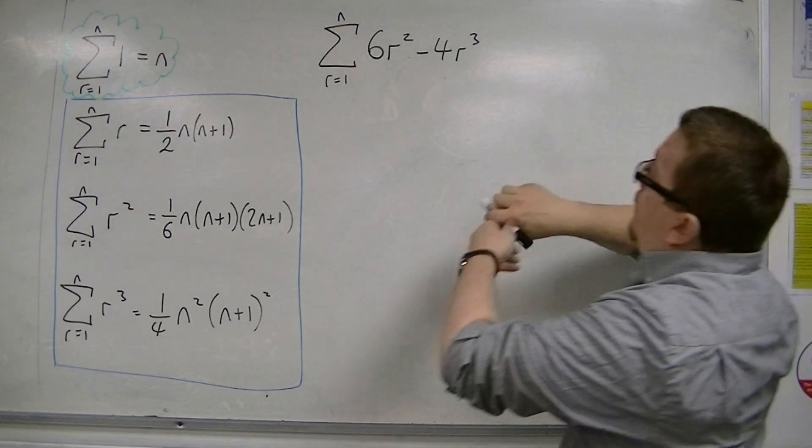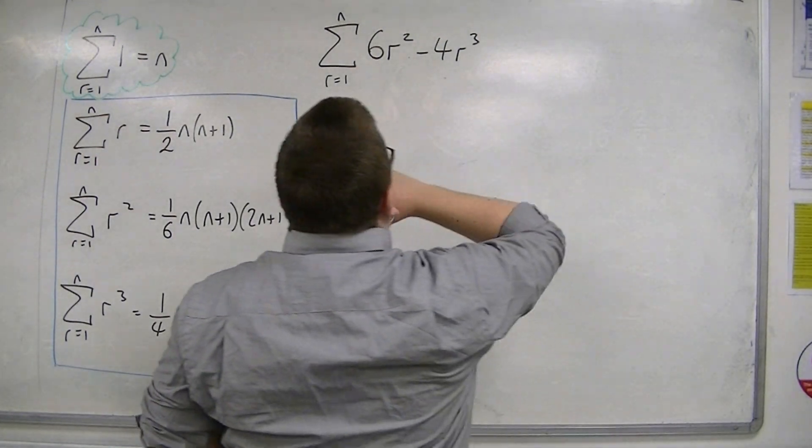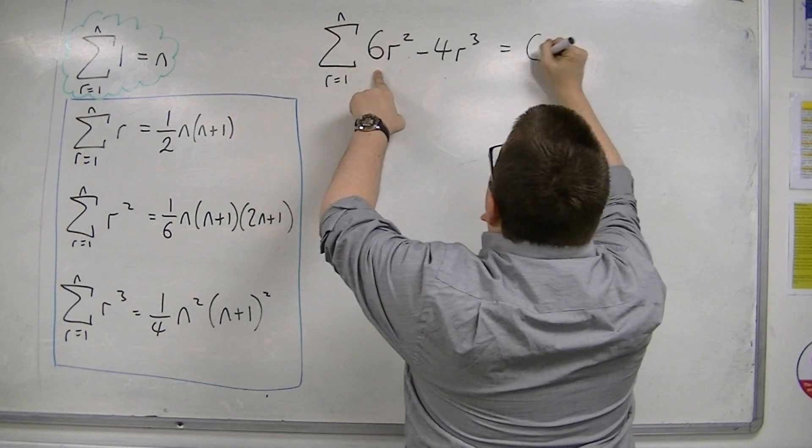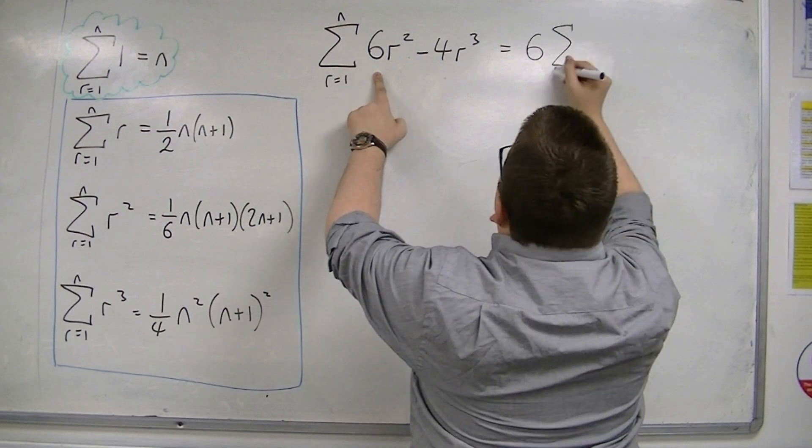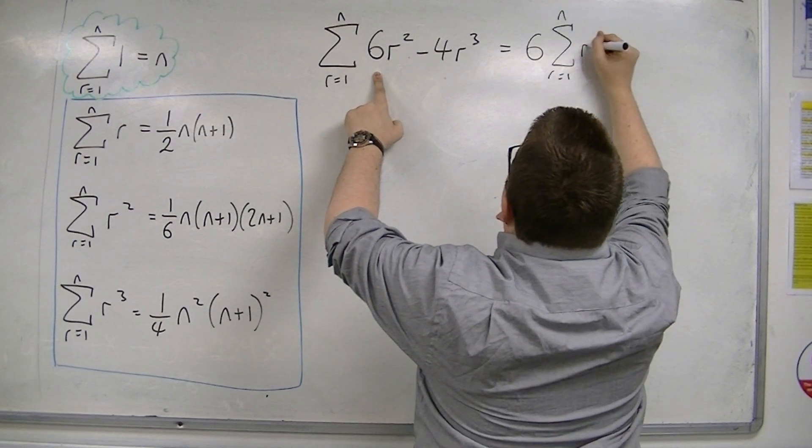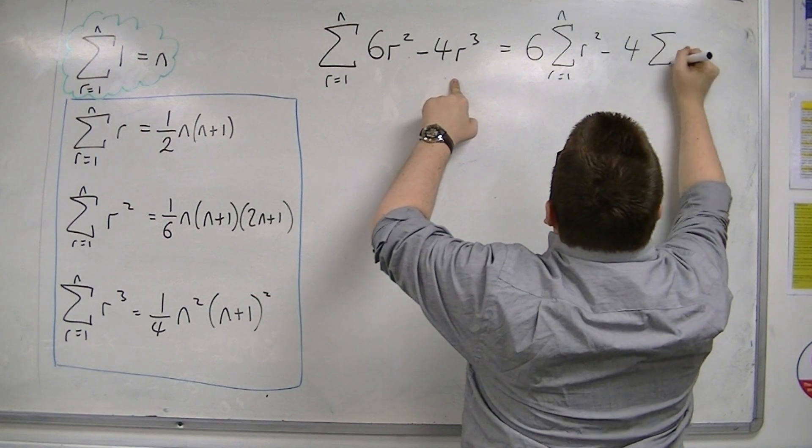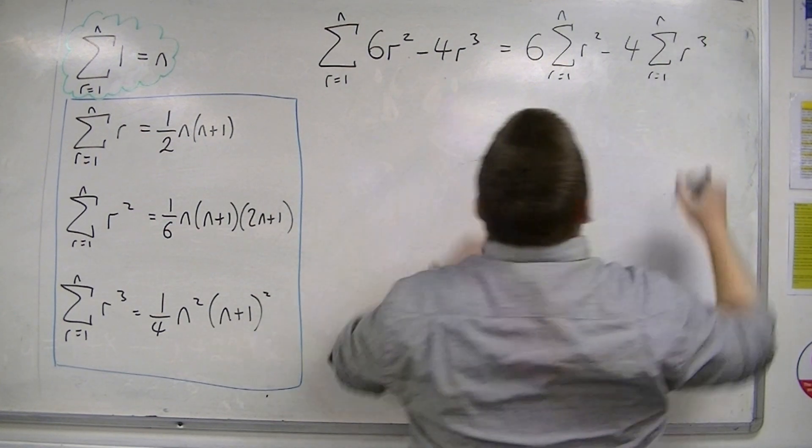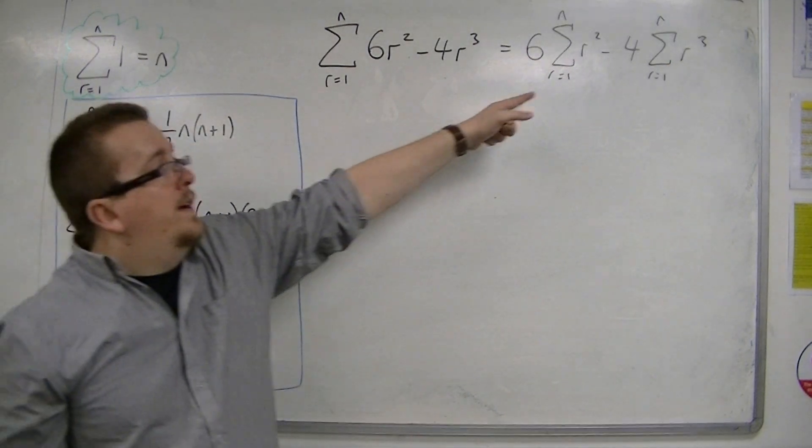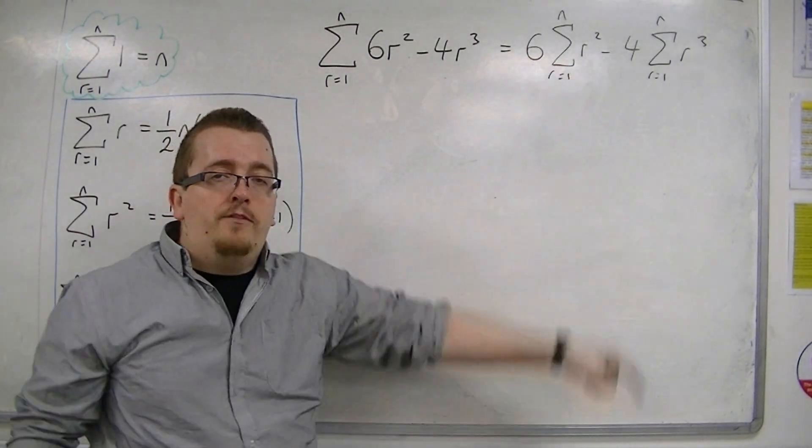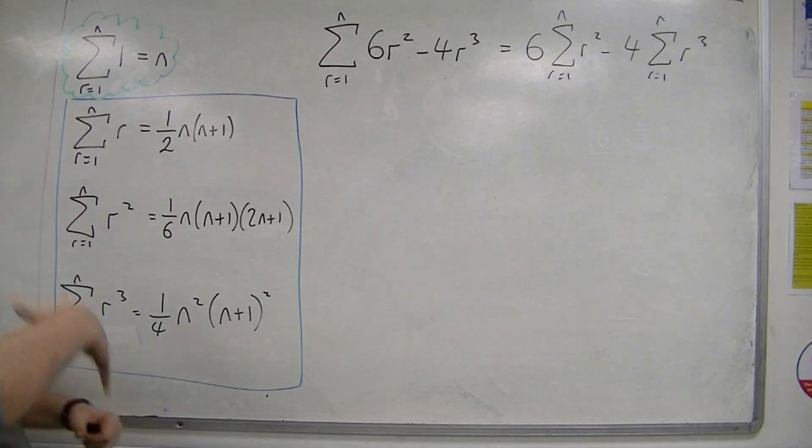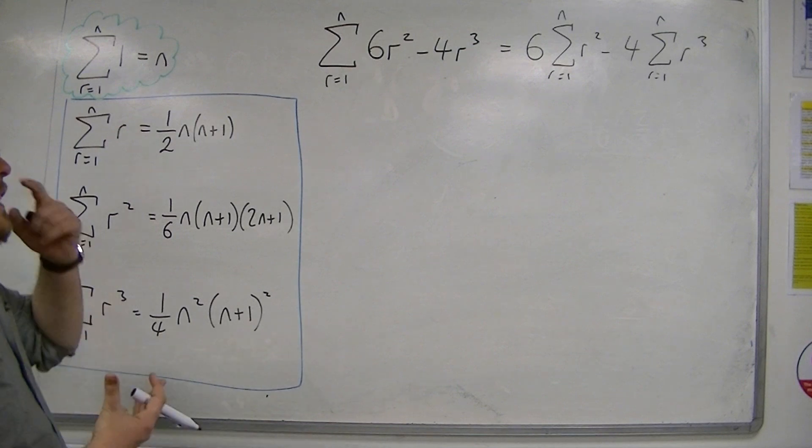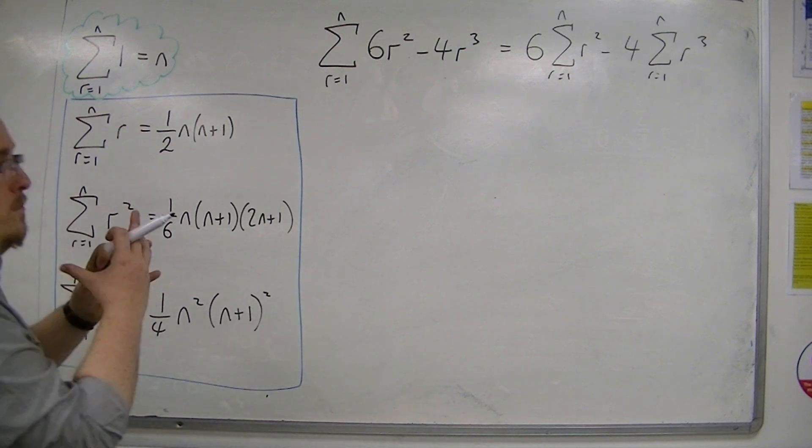So, if I'm going to expand this, then the first thing that you need to be able to do is say, well, this is 6 lots of r equals 1 to n of r squared, take away 4 lots of the sum from r equals 1 to n of r cubed. Now, this line of working, you don't actually have to write down if you're already happy about that expansion. But I'm doing it for this video just to show you that that's what we can do. We can break it apart.